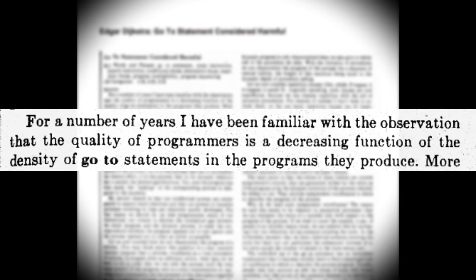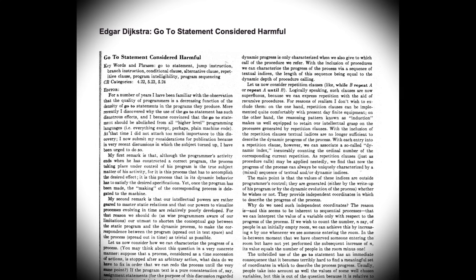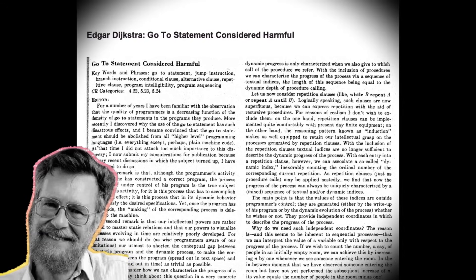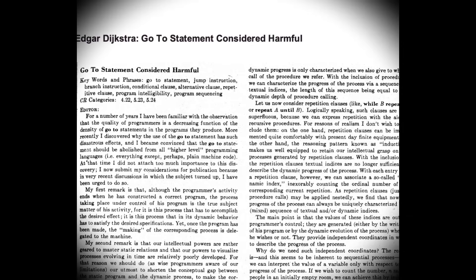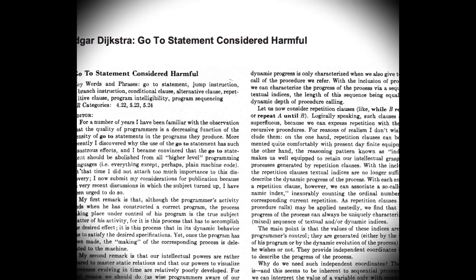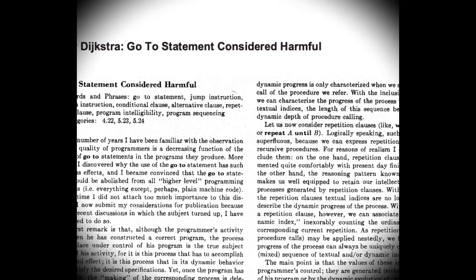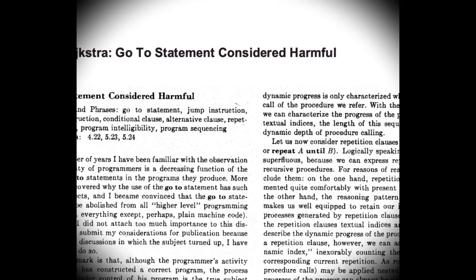For a number of years, I've been familiar with the observation that the quality of programmers is a decreasing function of the density of the go-to statements in the programs they produce. This was the beginning of one of the most inflammatory papers in the history of computer science. And in one paragraph, Dijkstra brought to the forefront of the software world a problem that was before only being discussed behind doors — the question of whether the go-to statement is more detrimental than it is helpful in the production of good and correct software. This is the history of the infamous go-to statement.